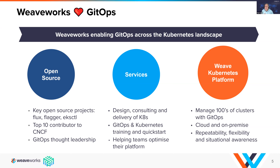We also provide consulting, professional services, design, and architecture from the very people who wrote the tools. Things like Flux and Flagger are the tooling you're going to see today — those engineers work for Weaveworks. We also have a pre-packaged upstream open source Kubernetes that is GitOps-enabled from start to finish.